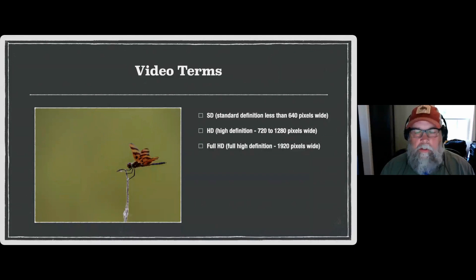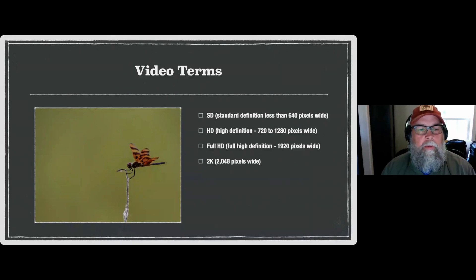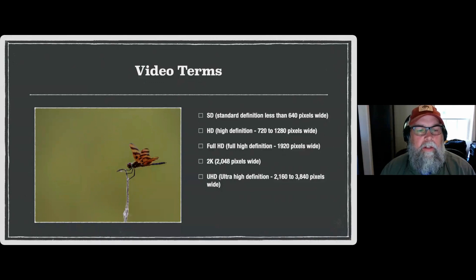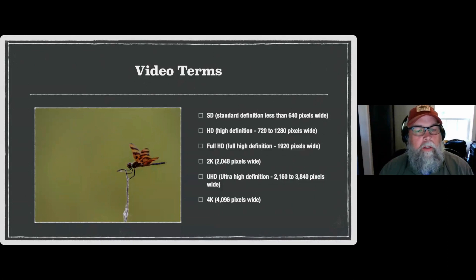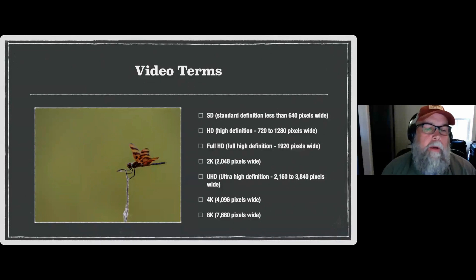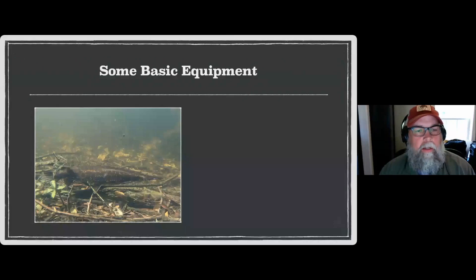Then we move into Full HD — up to 1920 pixels wide. From there, 2K came out, then UHD — Ultra High Definition — at 2160 to 3840 pixels wide. That's when things got kind of interesting for me. Then of course you've got 4K, which is really common now, and you're starting to see newer cameras shoot 7680 pixels wide.